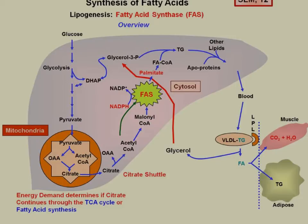Acetyl-CoA will combine with oxaloacetate to form citrate, and that citrate will move out of the mitochondria through the citrate shuttle. The reason this has to happen is because there is no transporter that will move acetyl-CoA directly out of the mitochondria by itself, so it has to be incorporated into citrate. When incorporated into citrate, it will be reconverted into acetyl-CoA and oxaloacetate.